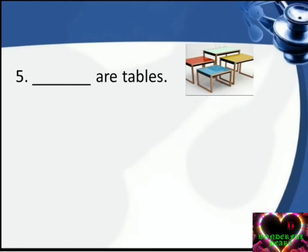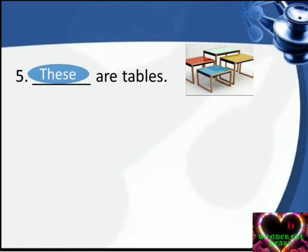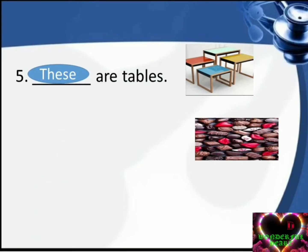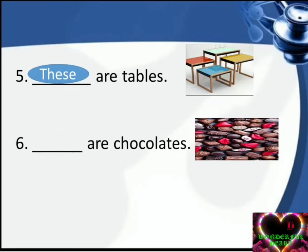Number five: dash are tables. Answer is: These are tables. Number six: dash are chocolates. Answer is: These are chocolates.